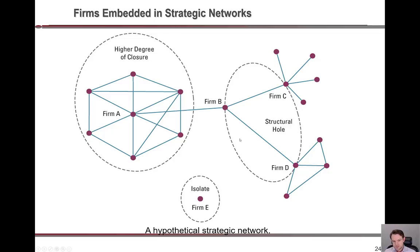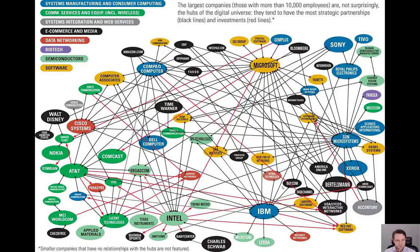You can see there are gaps in the network, and then there's a small firm all by itself with no advantage from the network at all. Here is an example of how interconnected some of our larger technology firms are — an older picture that still includes America Online — showing how much these firms are connected through strategic partnerships or actual equity investments shown as red lines. Certain firms act as hubs of many other different firms, which puts them in a good bargaining position.